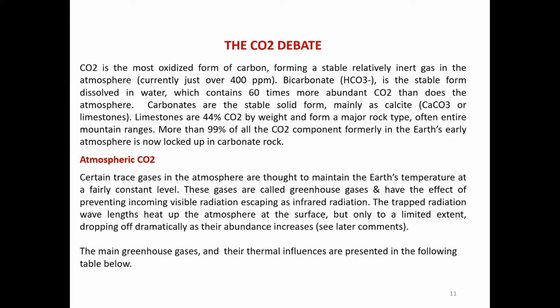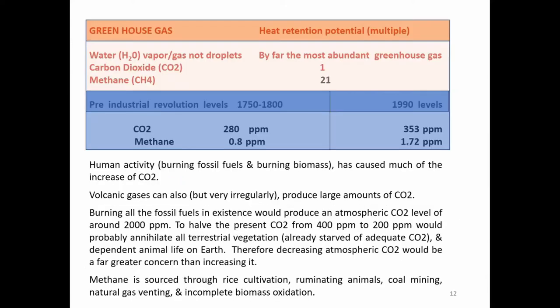Atmospheric carbon dioxide. Certain trace gases in the atmosphere are thought to maintain the Earth's temperature at a fairly constant level. These greenhouse gases have the effect of preventing incoming visible radiation escaping as infrared radiation. The trapped radiation wavelengths heat up the atmosphere at the surface, but only to a limited extent, dropping off dramatically as their abundance increases. The main greenhouse gases and their thermal influences are presented in the table below, including the relative heat retention capabilities of carbon dioxide and methane.